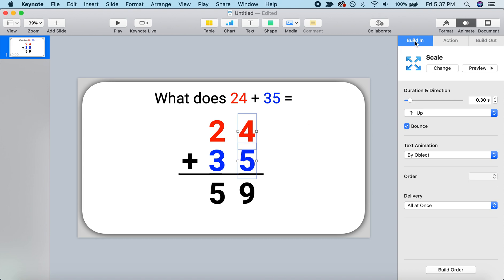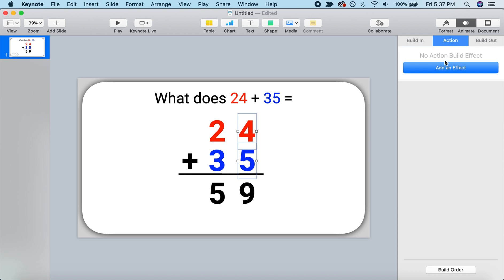So we're going to highlight both the 4 and the 5. And we're going to animate them not with a build in, but with an action. Just to draw students' attention to these numbers as we add them. So let's add an effect. And I like the pop effect. You can see it's going to give them a little bit of a pop. So we'll go ahead and add that. And I like to make the pop really big. So not 120, let's make it 200%.